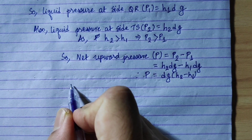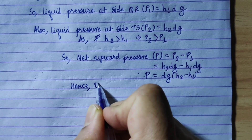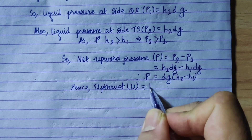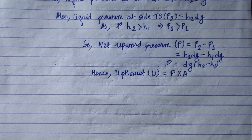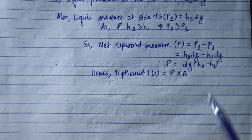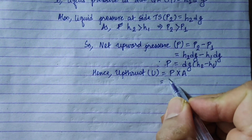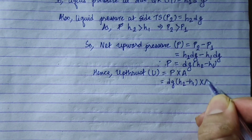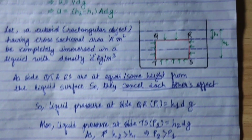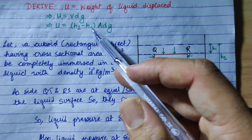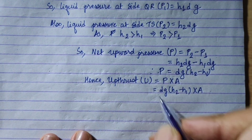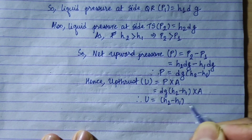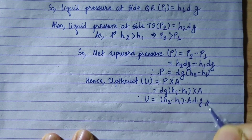Hence, upthrust is the upward acting force. Upthrust equals pressure into cross-section area. So upthrust U = P × A. Replacing P with d·g·(h2 - h1): U = (h2 - h1)·A·d·g. This is our third relation, now proved. Rearranging: upthrust = (h2 - h1) × A × d × g. This relation is now proved.